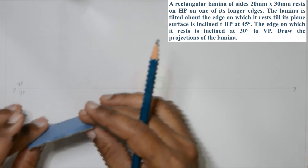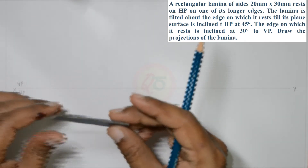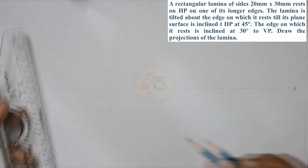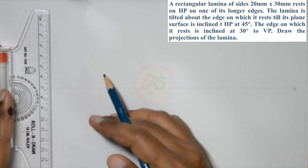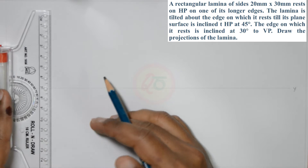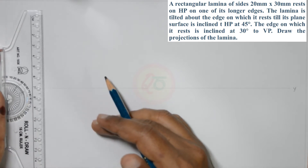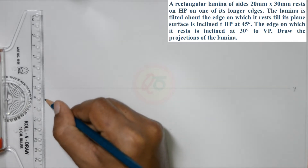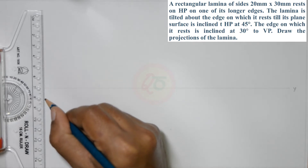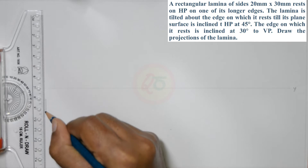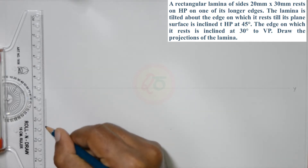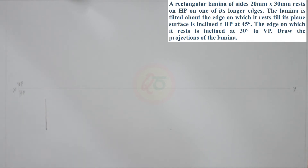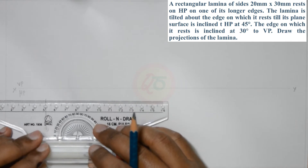When viewed in the front view, it will be seen as a straight line — a shorter-edge straight line. With your 2B pencil, the dimension is 30 mm by 20 mm. Draw a line approximately 1.5 cm or 15 mm from the x-y line, then draw a 30 mm line, because it is the longer edge. Complete the rectangle where the shorter edge is 20 mm.